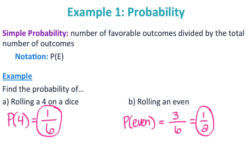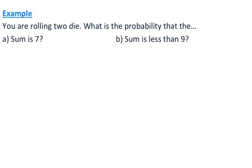Let's spice up the probability a little bit. Now you're rolling 2 dice. What is the probability that the sum is 7, and what is the probability that the sum is less than 9? I'm looking at 2 dice, taking the numbers after rolling them and adding them together. I need to figure out all of my possible outcomes.